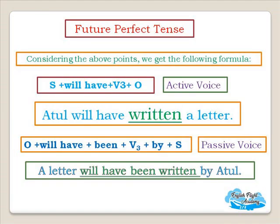Considering the above points, the active voice formula for future perfect is: Subject + will + have + Verb 3 + Object. Example: 'Atul will have written a letter.' When changed into passive voice, the formula is: Object + will have + been + Verb 3 + by + Subject. Example: 'A letter will have been written by Atul.'